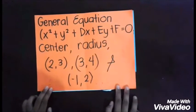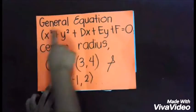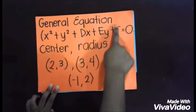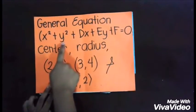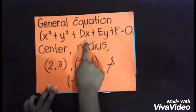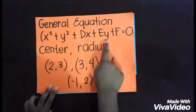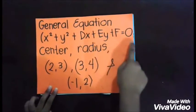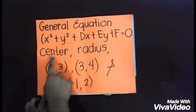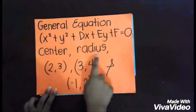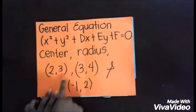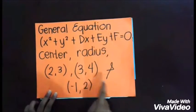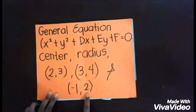For example, we will find the general equation, which is x² + y² + dx + ey + f = 0, its center, and the radius, given points (2, 3), (3, 4), and (-1, 2).